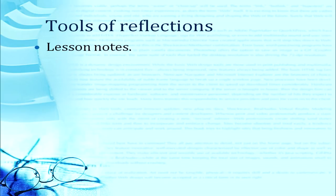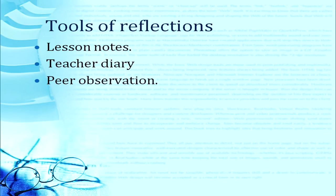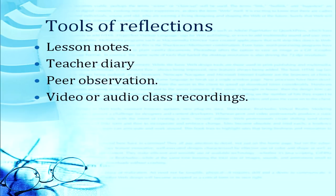Now we come to the tools of reflection — how we reflect. We reflect through lesson notes, writing down notes in lesson plans. Then the teacher diary, where we write what we are going to teach today, what method we are going to use, how we are going to assess. Your teacher diary is again a tool of reflection. After the teacher diary comes peer observation — one of your colleagues sits in the class, observes, and writes down comments for you. That becomes peer observation, a tool of reflection. You can also get a video or audio recording of your classroom teaching prepared, and by watching them you try to find out where you can improve — that again is a very good tool of reflection.